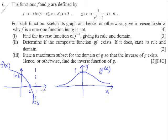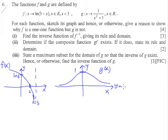Now do remember — in any sketch you will always have to show the x and y intercepts, and any asymptotes. You have to show all the equations of all asymptotes if there are any. In this case, the x-axis is the asymptote, so we show y equals 0. Hence, give a reason to show that f is one-to-one and g is not.